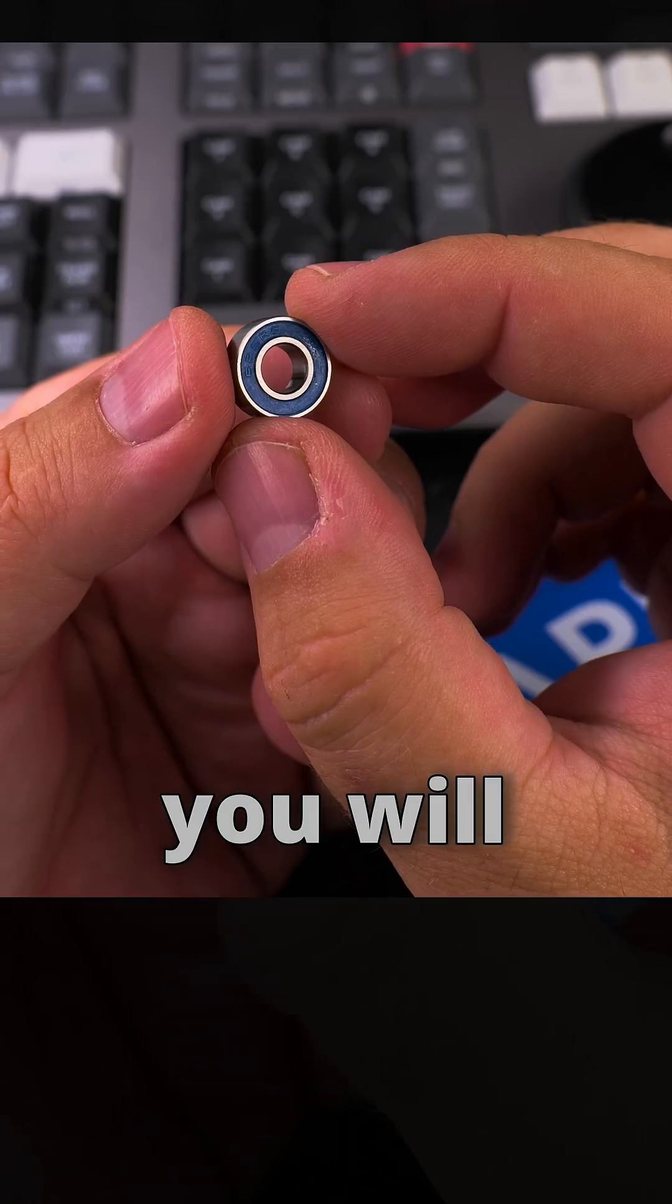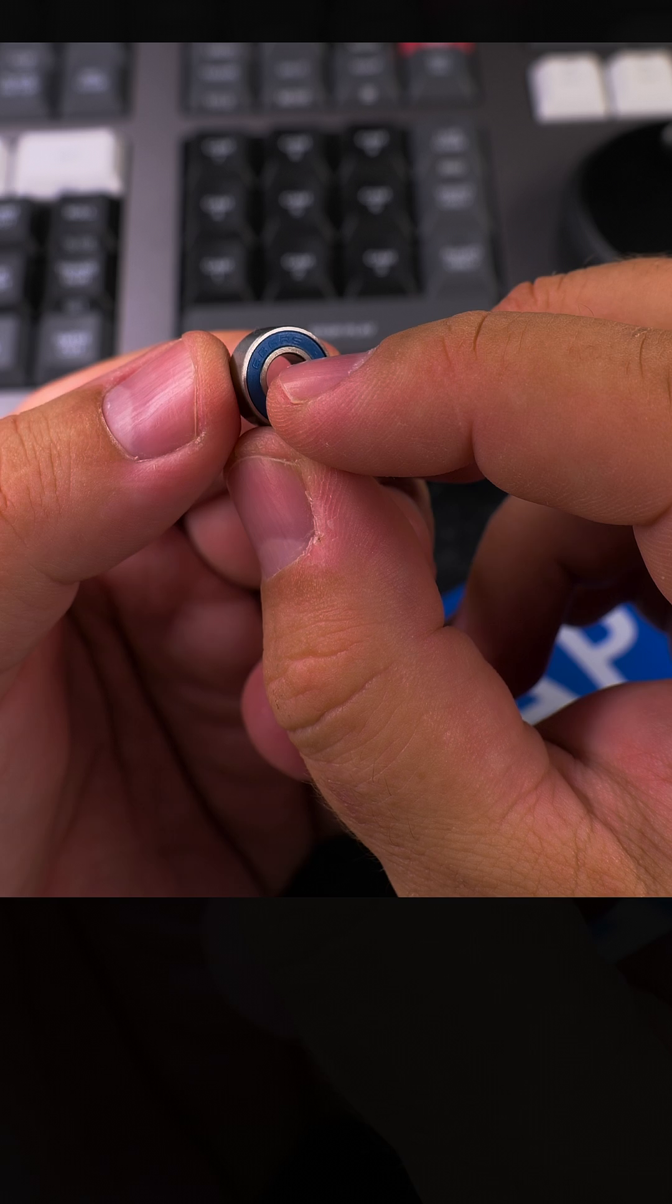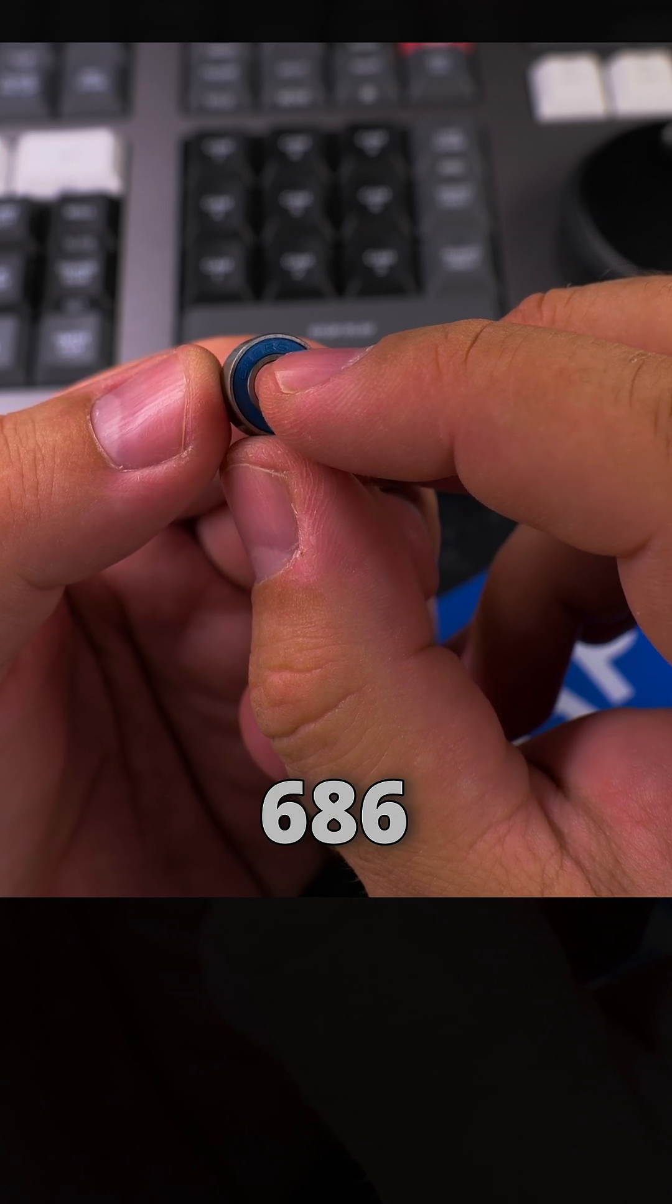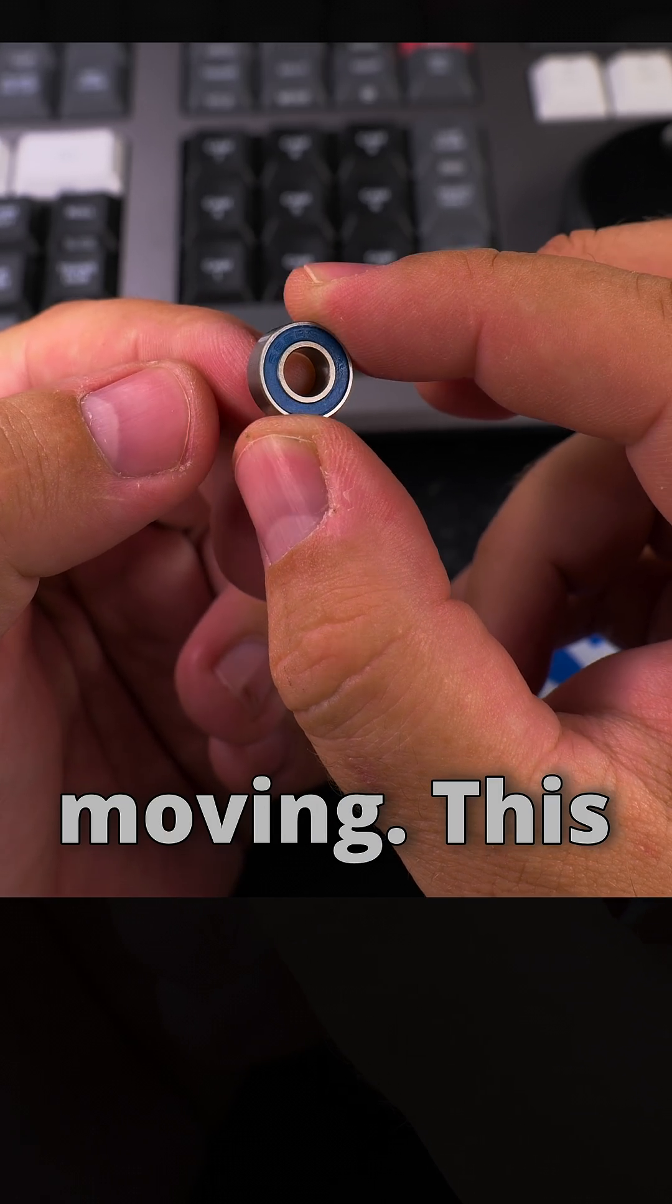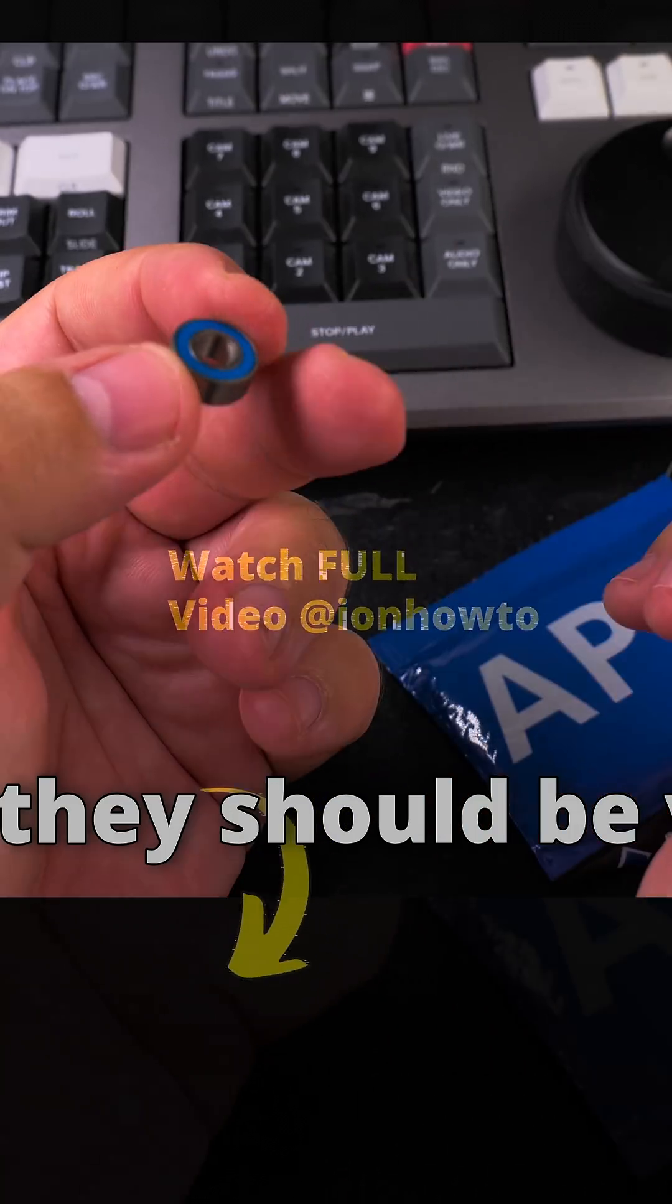And I opened this one. You will see on these bearings also you have 686RS, and the center is not moving, the outside is moving. That's how the bearings work and they should be very precise.